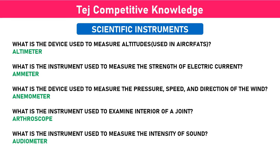What is the device used to measure the pressure, speed and direction of the wind? Anemometer. What is the instrument used to examine interior of a joint? Orthoscope.